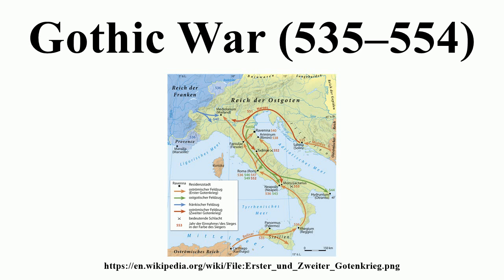The bloodless victory at Ariminum strengthened Narses' position vis-à-vis Belisarius, with many Roman generals, including John, turning their allegiance to him. In the council after the relief of Ariminum, the dissension came to the fore. While Belisarius was in favor of reducing the strong Gothic garrison of Auximum in their rear and relieving the siege of Mediolanum, Narses favored a less concentrated effort, including a campaign in Aemilia.